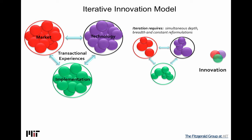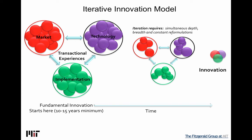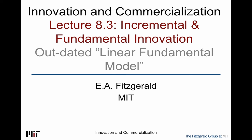Hopefully now this is a complete model. This model has iteration, transactional experiences, and increased uncertainty the further back in time you go. Fundamental innovation usually requires all three areas — if you're out 10 to 15 years or more. Then you have incremental innovation at the nearer end, and medium-scale innovations in the middle. There's a complete spectrum — we've just looked at both ends: the incremental end and the fundamental end.